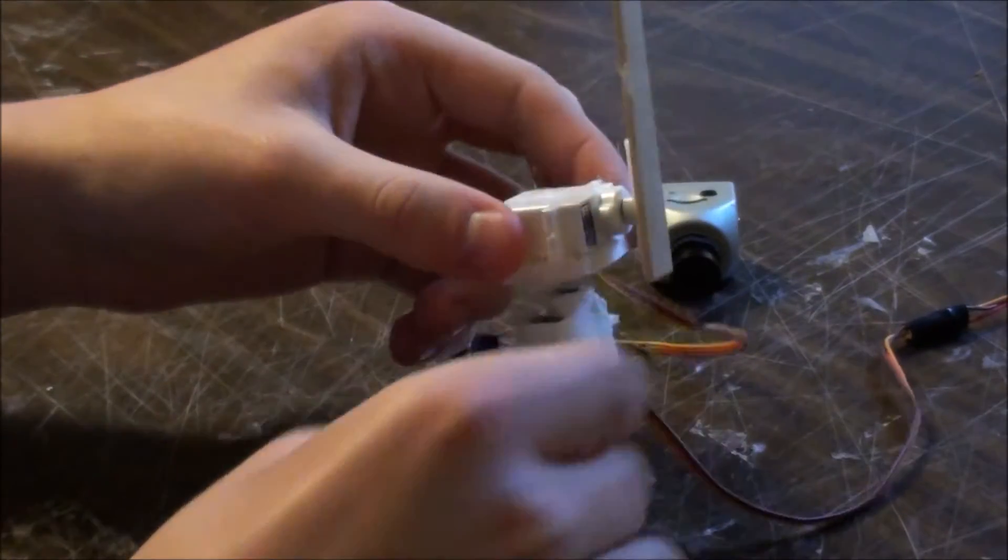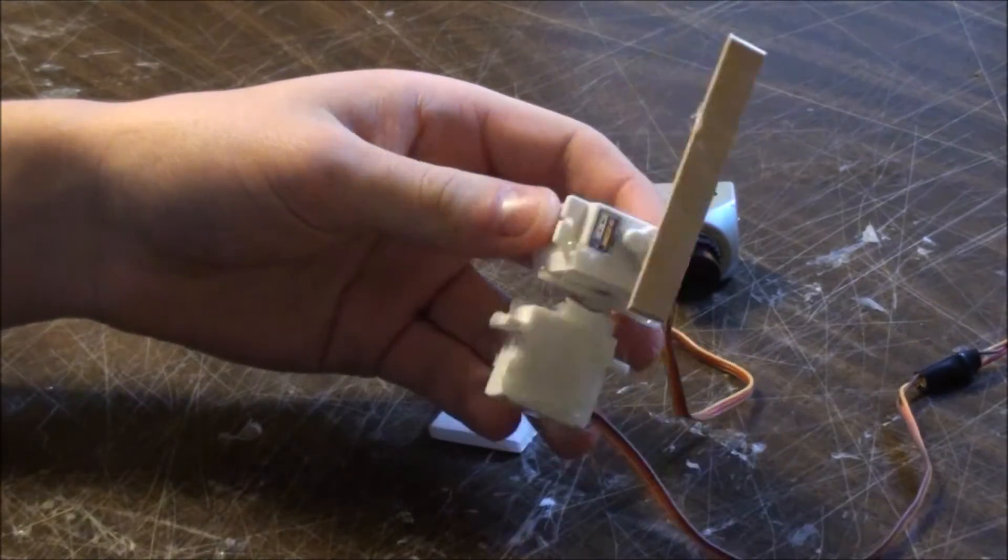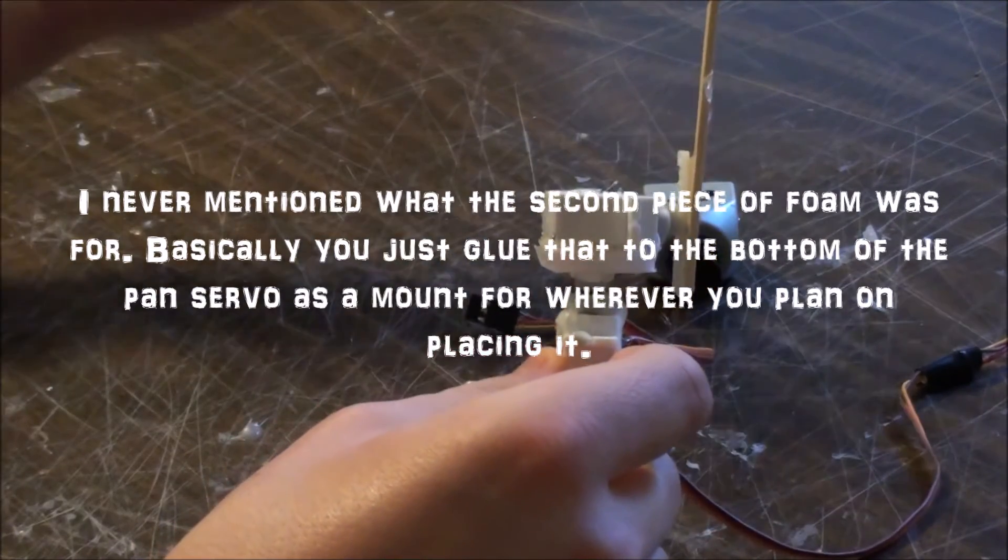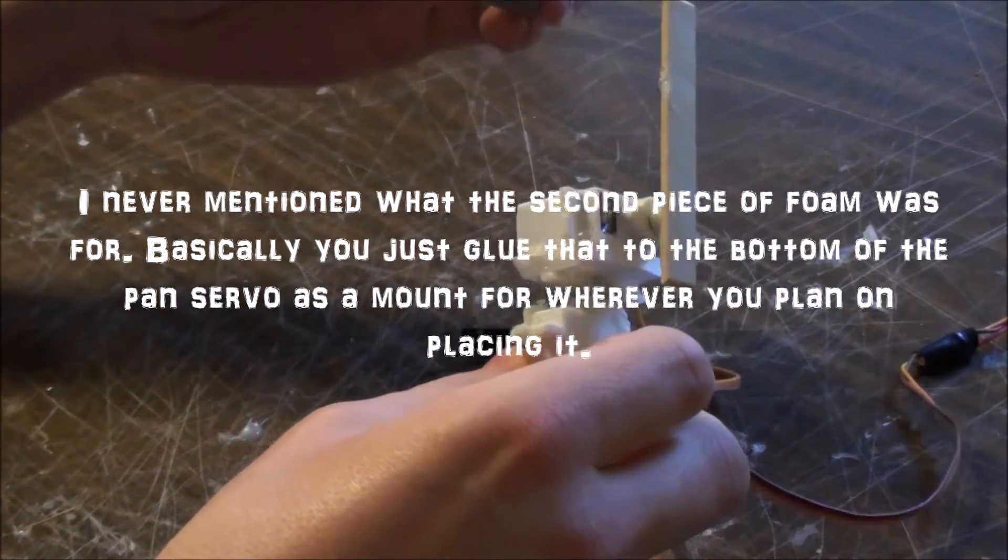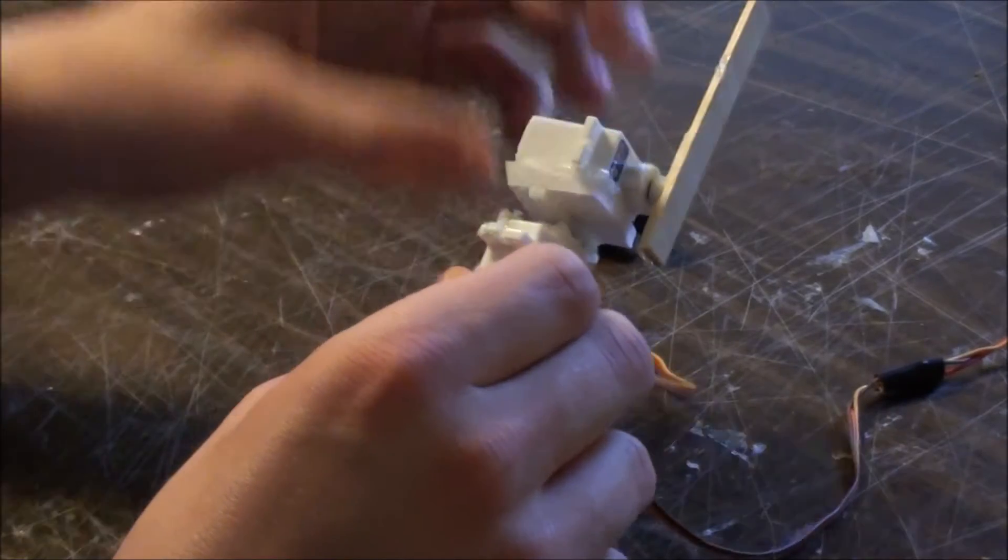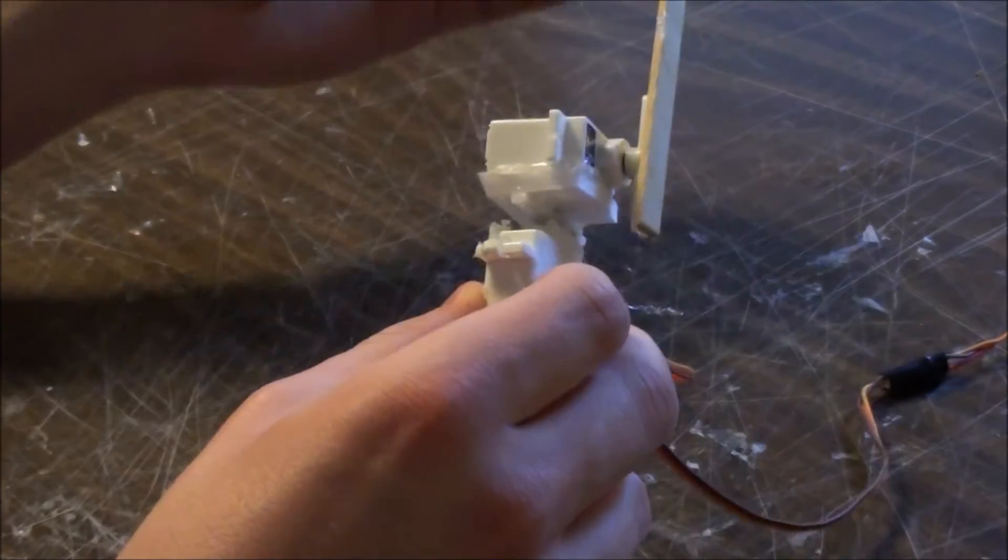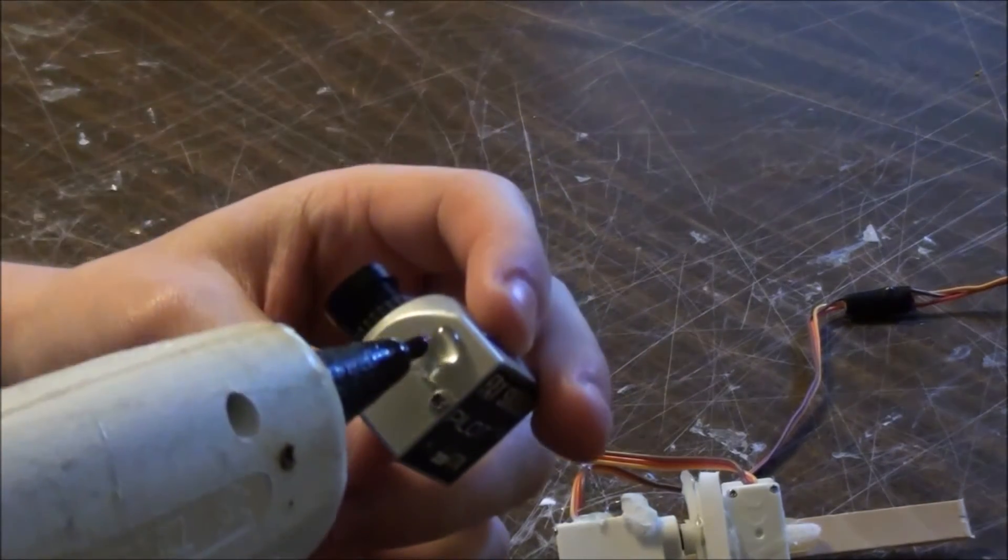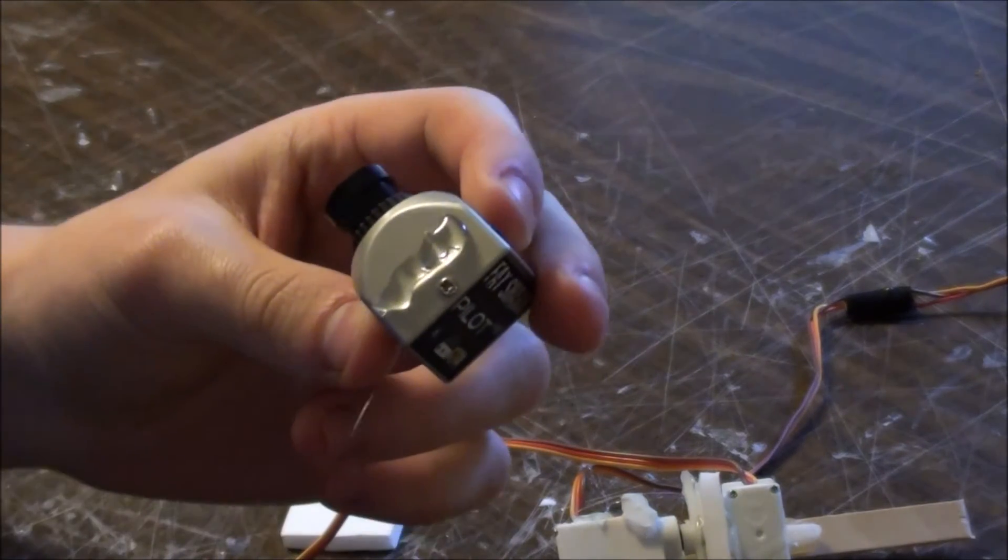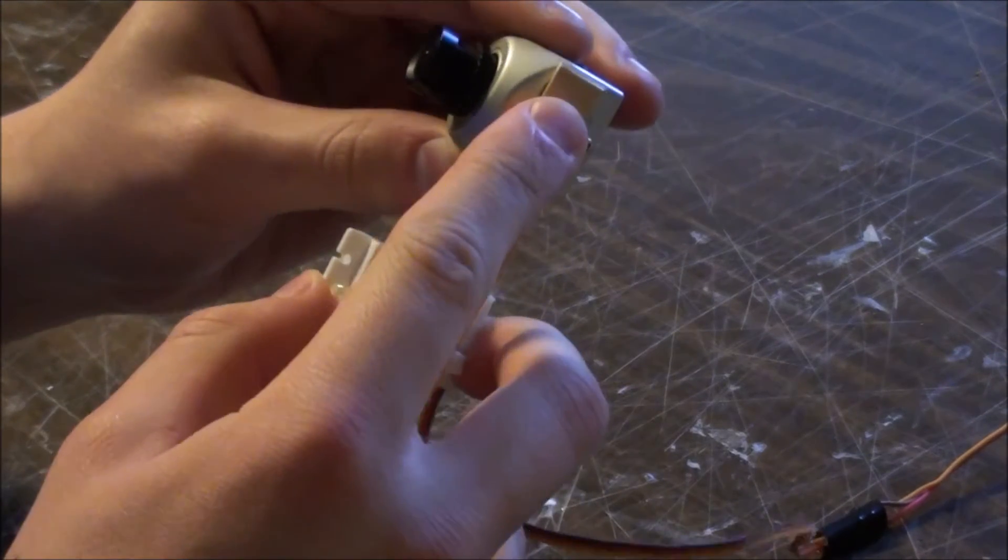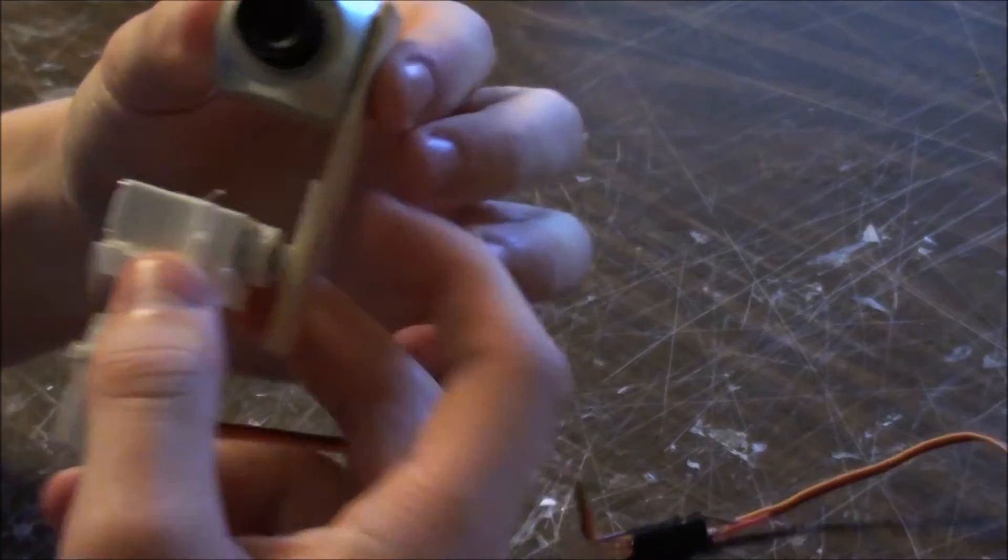So now, our pan and tilt is pretty much done. Once that's dry, we'll go ahead and glue the camera on. As you can see, this is a metal case. This is the Pilot Cam HD from Fat Shark. This was the first camera I got. What we're going to do is just basically glue this on to the popsicle stick. We can put some glue on here and stick that right on top. And that's pretty much it. That is the pan and tilt.